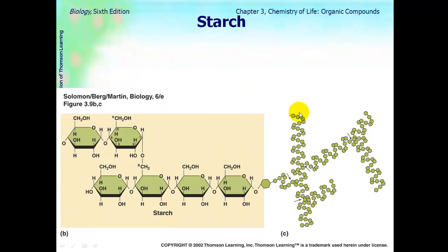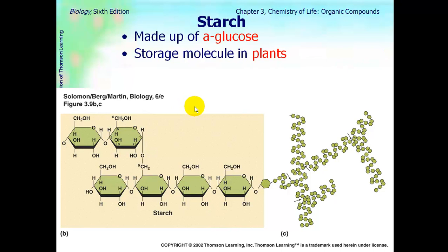The second polysaccharide was starch. Notice the difference. It has branches all over the place. It is made of alpha-glucose. So it is a little bit different. It is a storage molecule in plants. Plants store starch. And it is in branched chains.